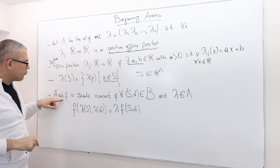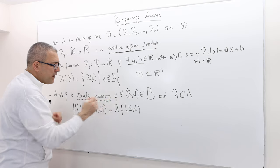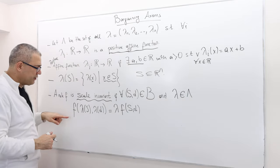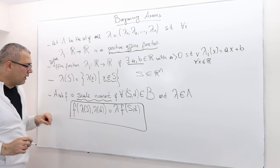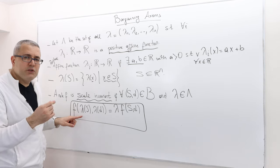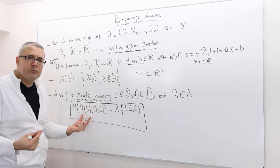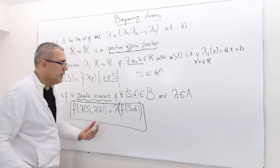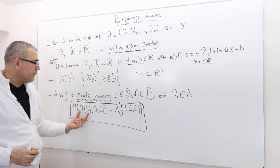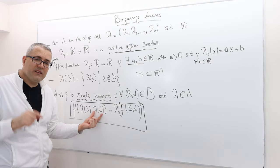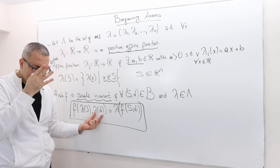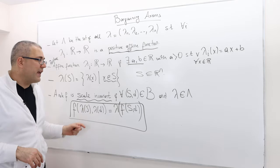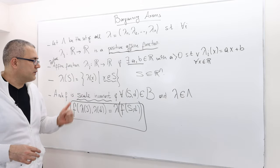Now the axiom: a bargaining rule f is called scale invariant if for any bargaining problem and for any positive affine transformation λ, the following equality holds. When I evaluate the solution of the transformed bargaining problem, it equals transforming the solution of the original problem with λ. That is, f(λS, λd) = λ(f(S, d)). If this is true for any bargaining problem and for any positive affine transformation, then we call this rule scale invariant.